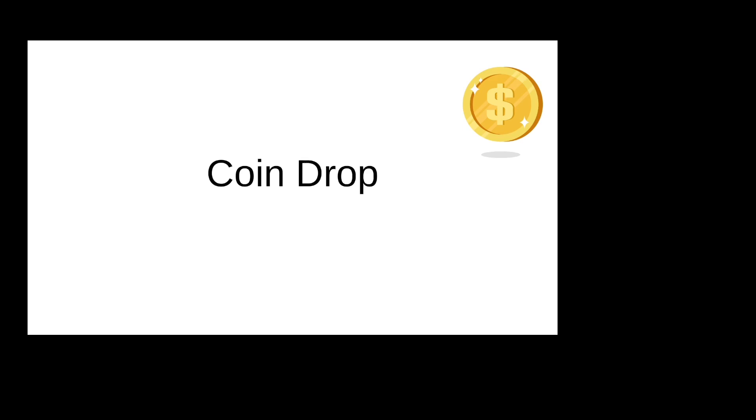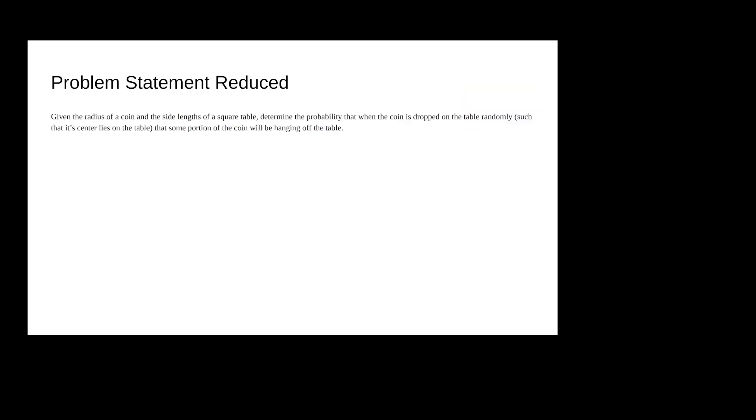I'm Thomas Meeks, on the UCF programming team, and I'll be going over editorials for CoinDrop and Denker's Dice. In CoinDrop, given the radius of a coin and the side length of a square table, determine the probability that when the coin's center is dropped randomly on the table, some portion of the coin will hang off the edge. A key fact: the center is guaranteed to lie on the table.